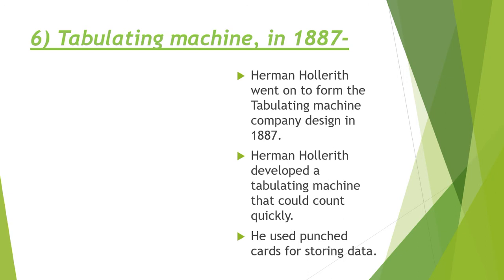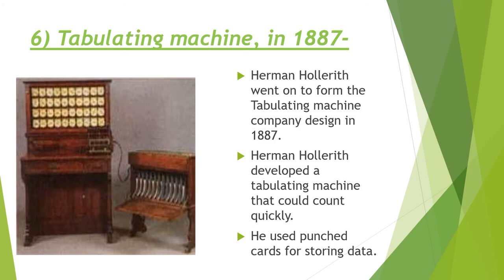Sixth is the Tabulating Machine, in 1887. Herman Hollerith developed a tabulating machine that could count quickly. He used punch cards for storing data, which was an idea of Charles Babbage. Herman Hollerith went on to form the Tabulating Machine Company, which later became IBM.